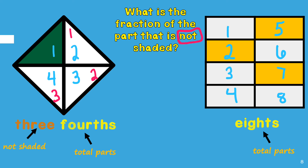Now we're going to count the total number of parts that are not shaded or colored: one, two, three, four, five. There are five parts that are not colored, so that number will go in front of eighths in word form. This number represents the number that is not shaded.